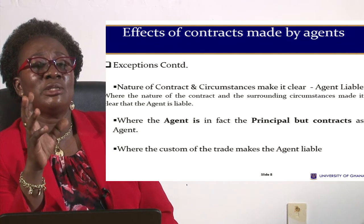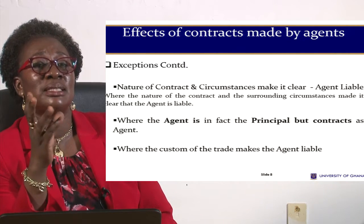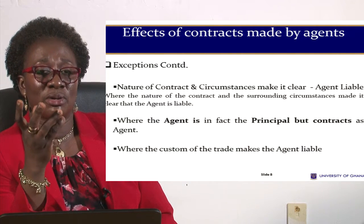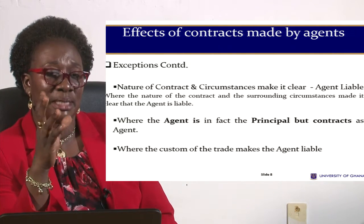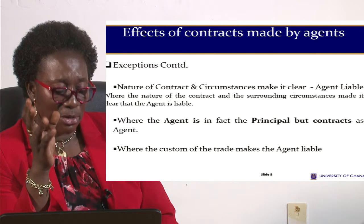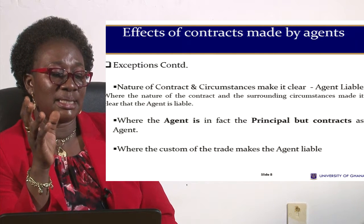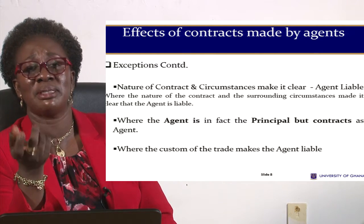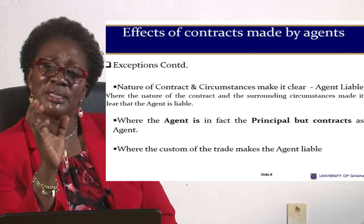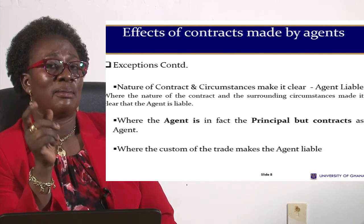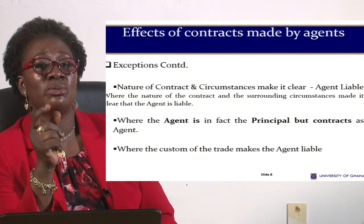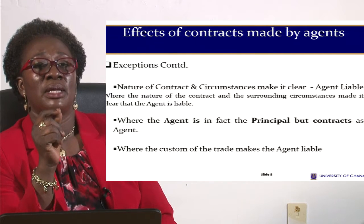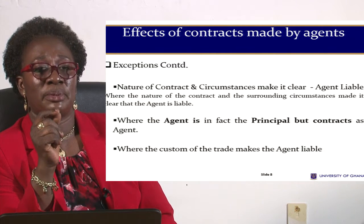There are also instances where the circumstances themselves will indicate, if you look at the nature of the contract and the surrounding circumstances, that even though he indicated he is acting for a particular person, everything he is doing is actually for himself. In such cases, the circumstances may make the agent personally liable and not the principal.